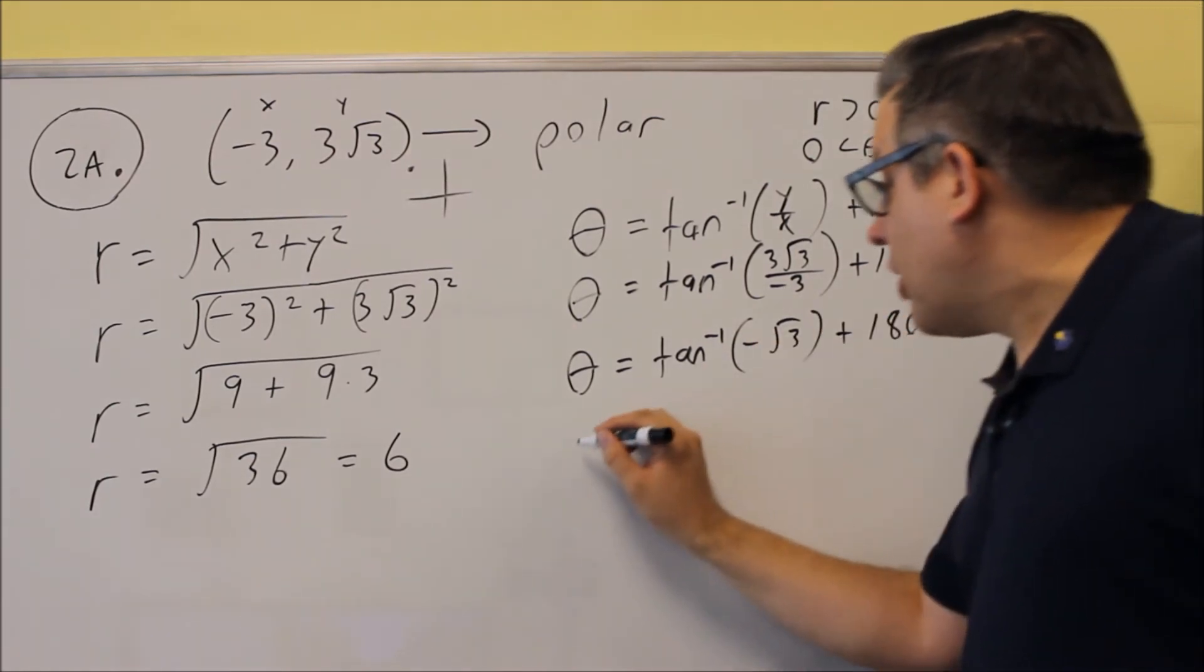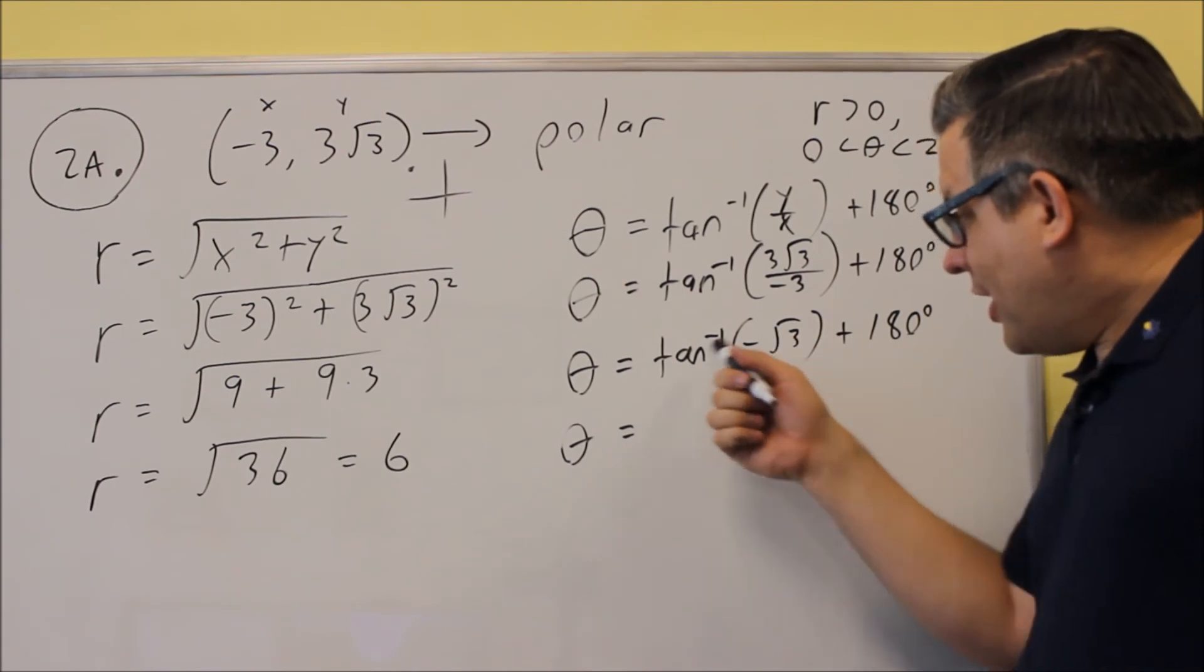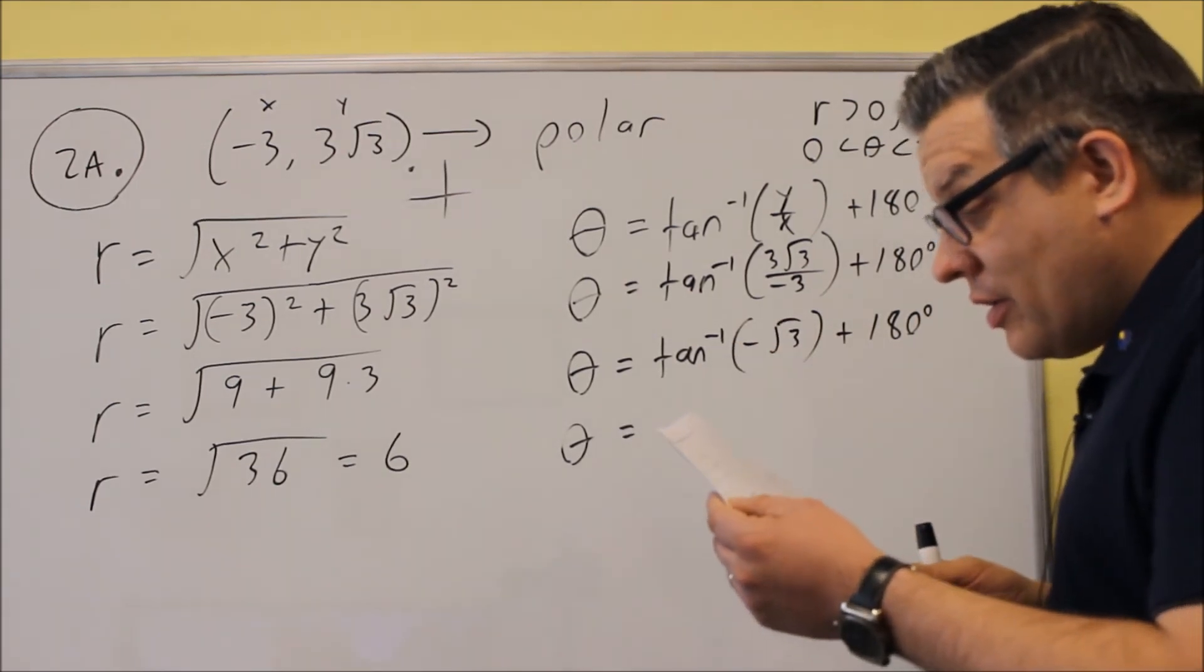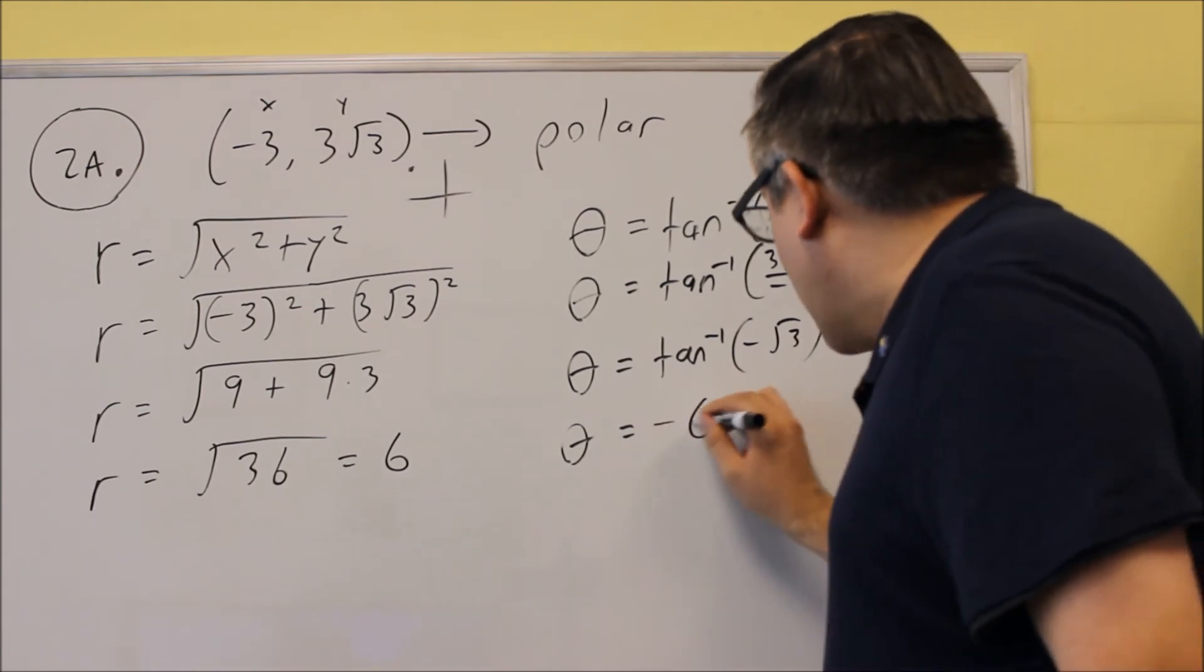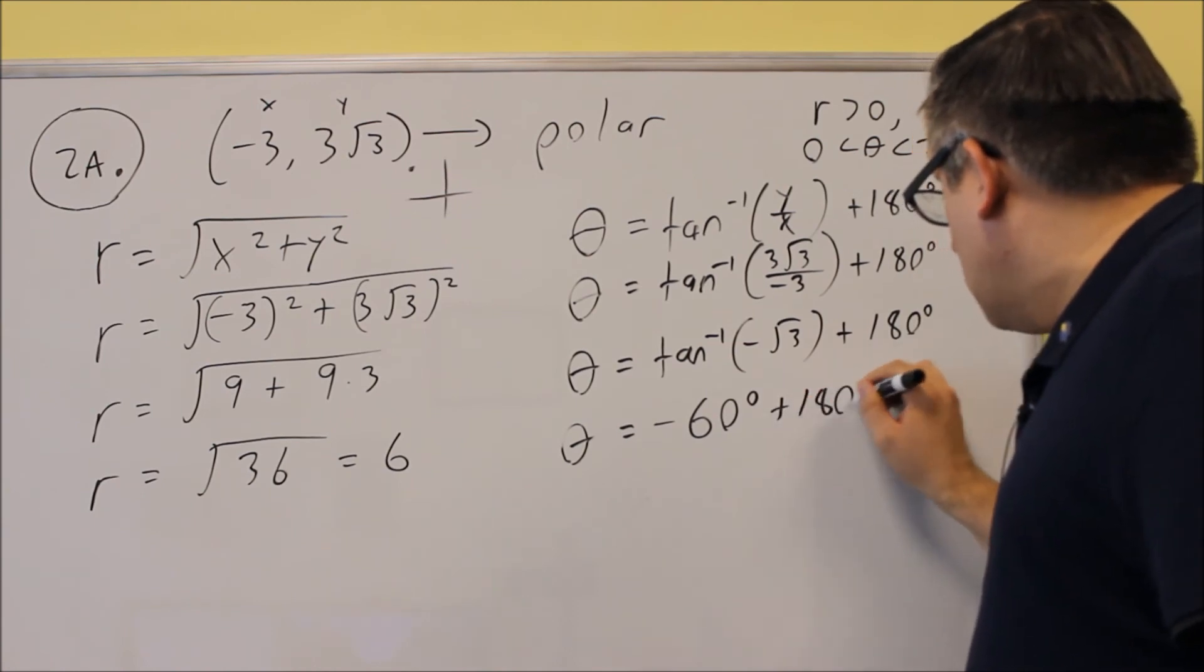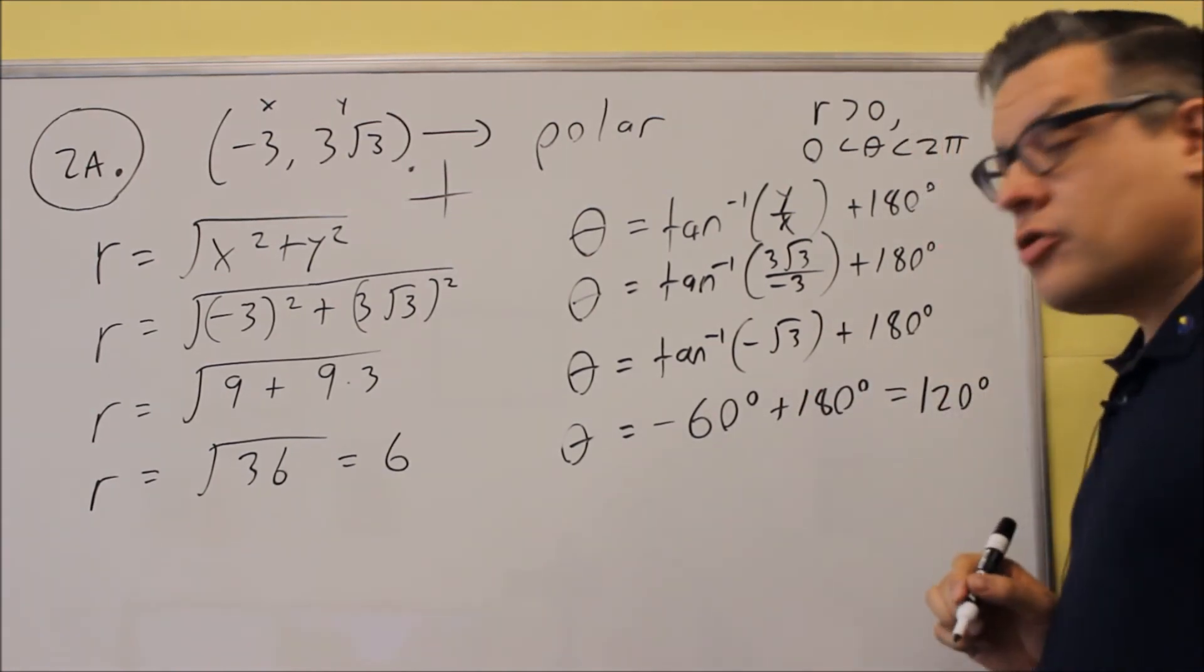We're going to do that part first in our calculator. Inverse tangent of negative square root of three, if we put that into the calculator, the calculator is going to give you negative 60 degrees. We're going to add that to 180, and we get 120 degrees.